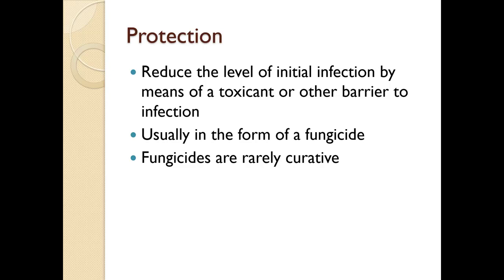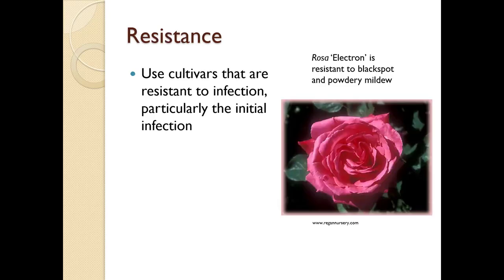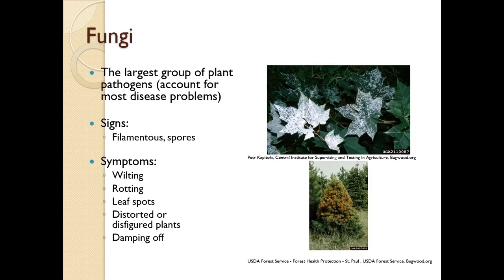Protection is reducing the level of initial infection using a toxicant or other barrier to infection, usually a fungicide. These are rarely curative — they work as protectants. Resistance involves using cultivars resistant to infection; here we have Rosa 'Electron,' which is resistant to black spot and powdery mildew.